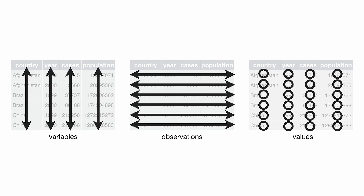We would like data to come in a particular format, as shown in this graphic, where each column represents a variable, each row represents an observation, and each cell represents a value. When this is the case, we call the data tidy, as opposed to messy.